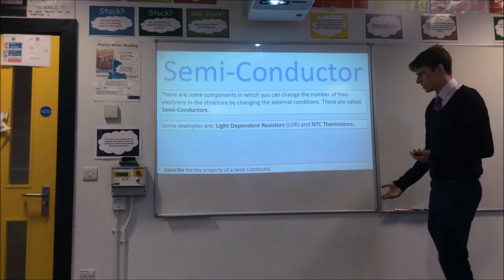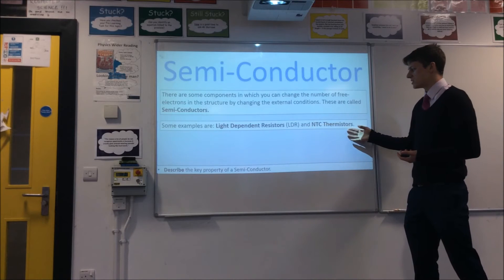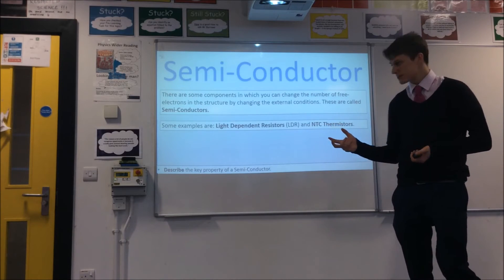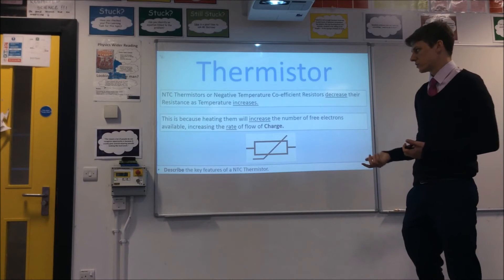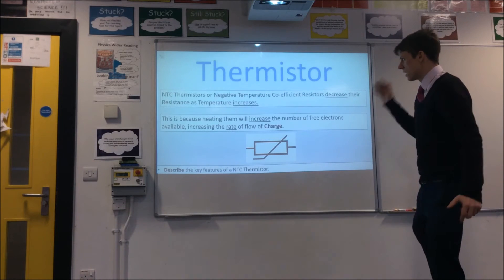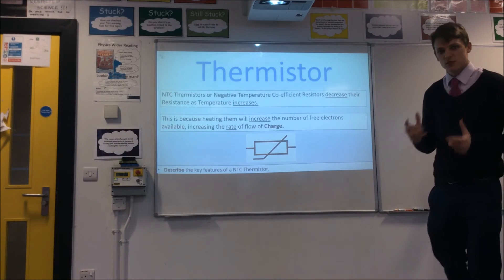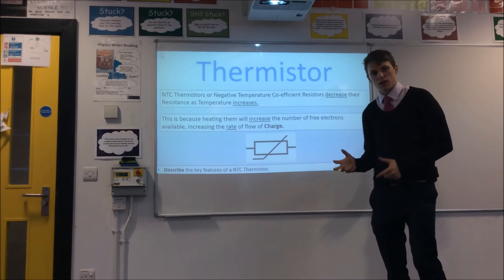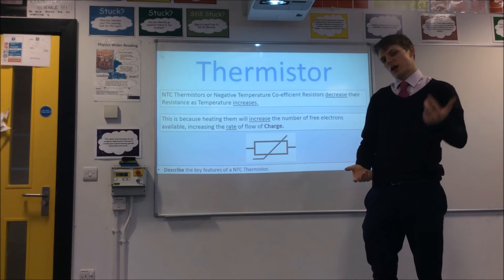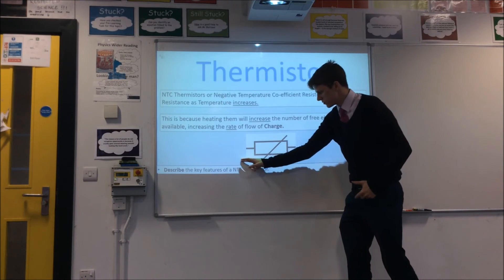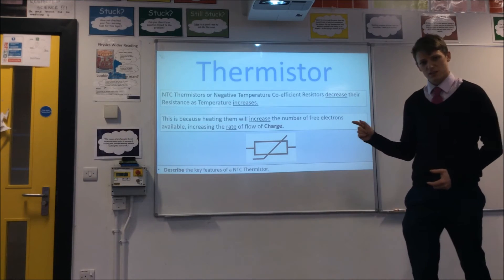Some examples include light dependent resistors or LDRs, thermistors, or specifically NTC thermistors. The thermistor is a contradiction to the general rule: an NTC thermistor, or negative temperature coefficient resistor, decreases its resistance as you increase the temperature. Increasing the temperature increases the number of free electrons in the structure, so it can carry more charge per second and has a lower resistance. In a circuit diagram, a thermistor looks like this symbol here.